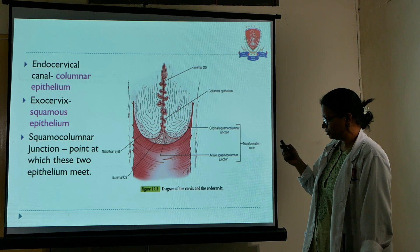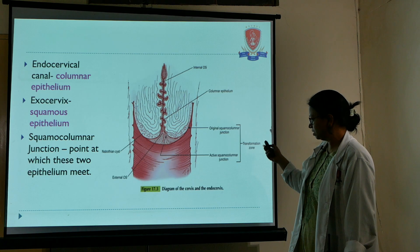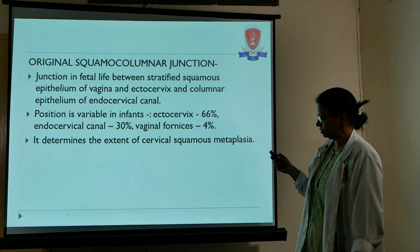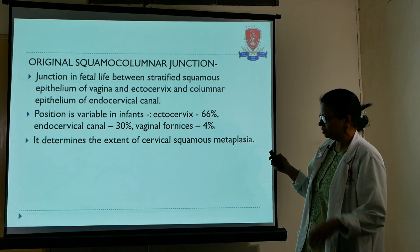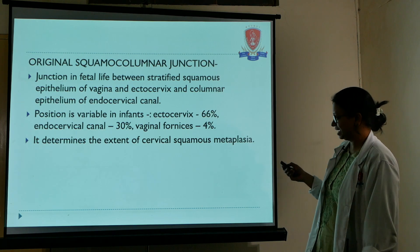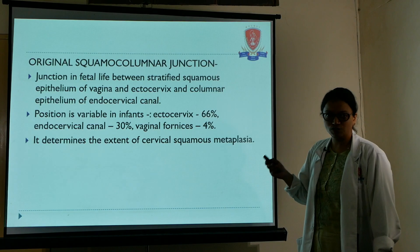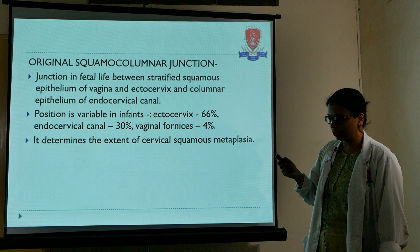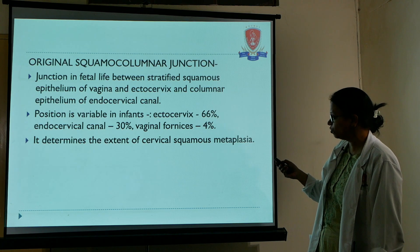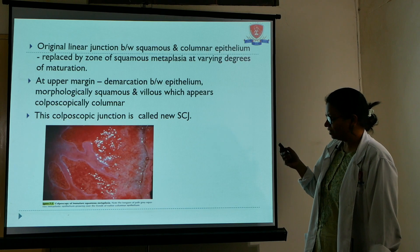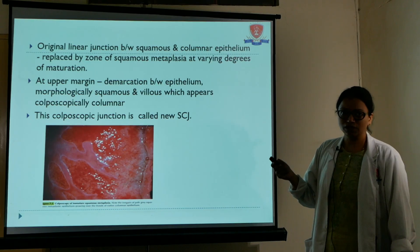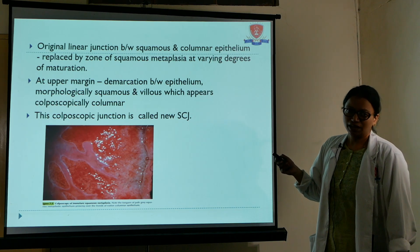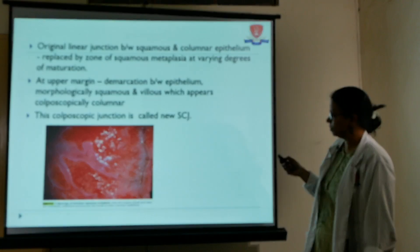The original squamous columnar junction is known as the old squamous columnar junction. Once the female becomes mature, the cervix increases in size and the old squamous columnar junction changes its position. The columnar epithelium gets averted out — known as ectropion — and is then exposed to the vaginal pH, becoming metaplastic and changing into squamous epithelium.